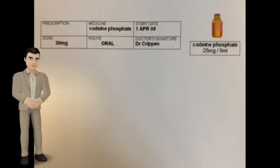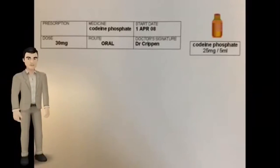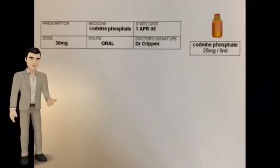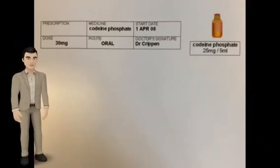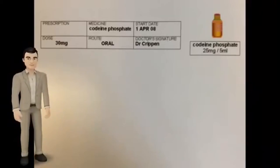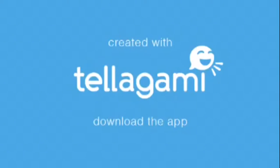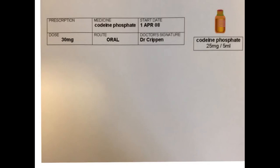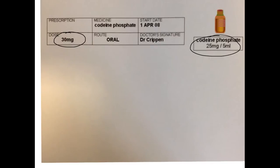Your patient has been prescribed 30mg of codeine phosphate. Codeine phosphate is available as a 25mg per 5ml syrup. How much syrup do you give the patient?